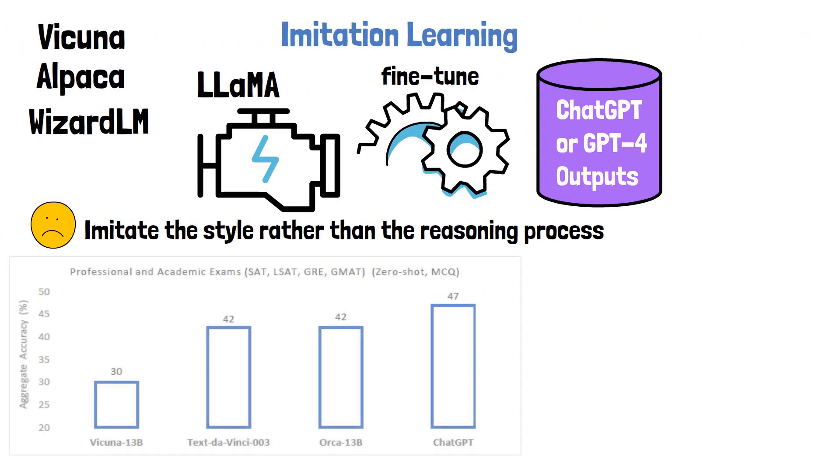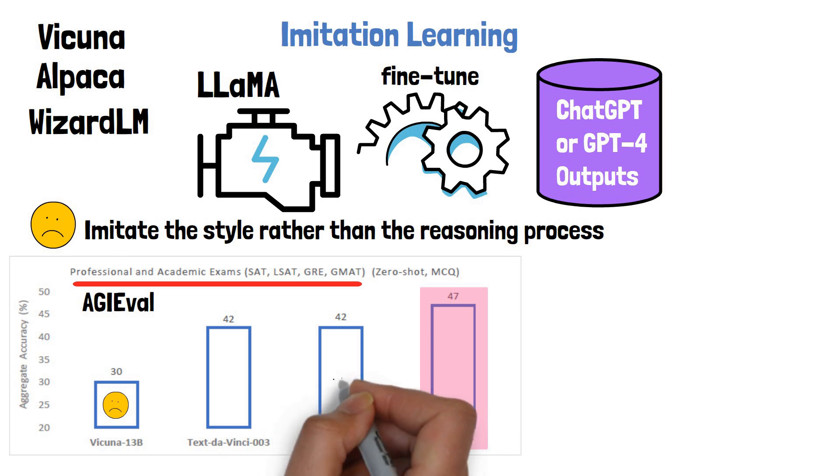And really, when the researchers ran evaluation on complex datasets, like professional and academic exams from AGI-Eval, we see that Vicuña lags behind much more significantly than the 92% of ChatGPT quality, while with ORCA we see the performance is significantly closer to ChatGPT.